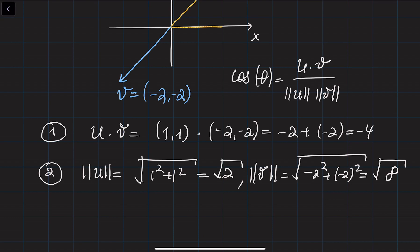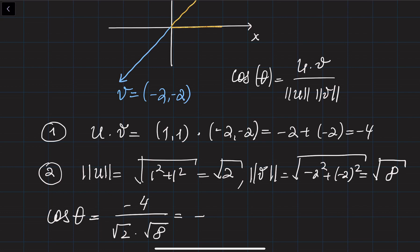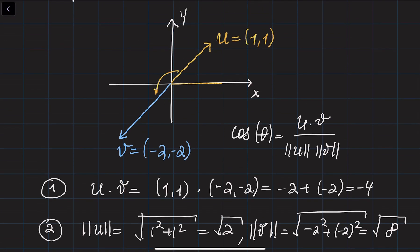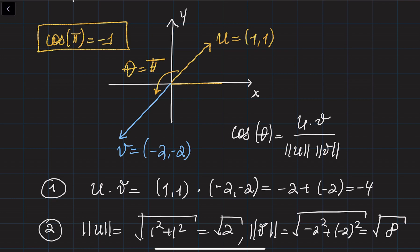Plugging everything into the formula: −4 divided by √2 × √8 = −4 divided by √16. The square root of 16 is 4, so this gives −4/4 = −1. Since the cosine of π equals −1, the angle theta between these two vectors is equal to π. This is how we use this formula to find the angle between two vectors.